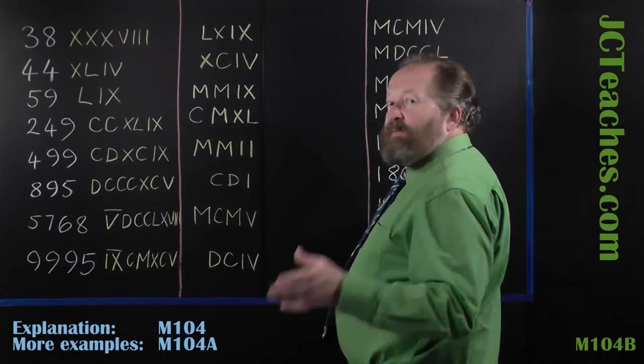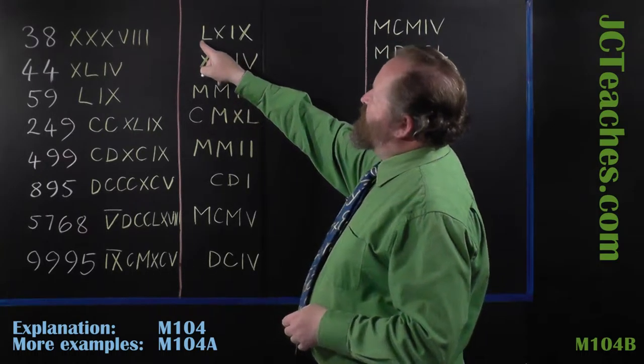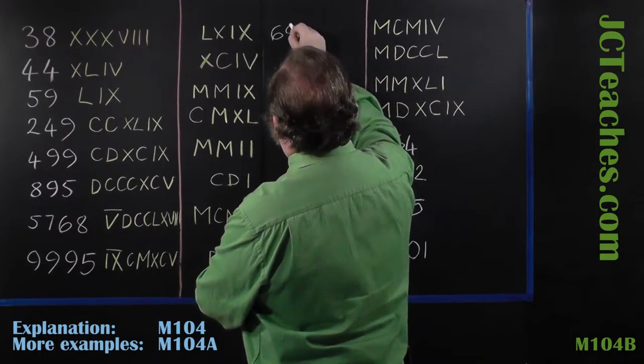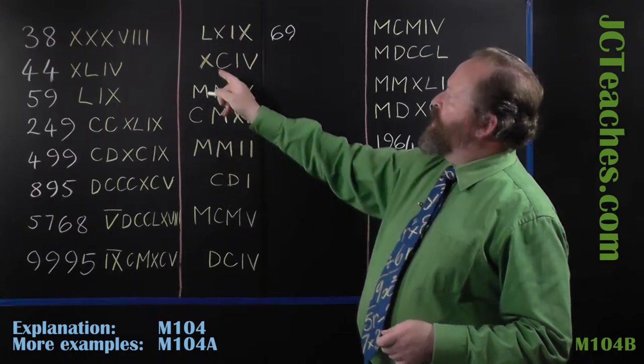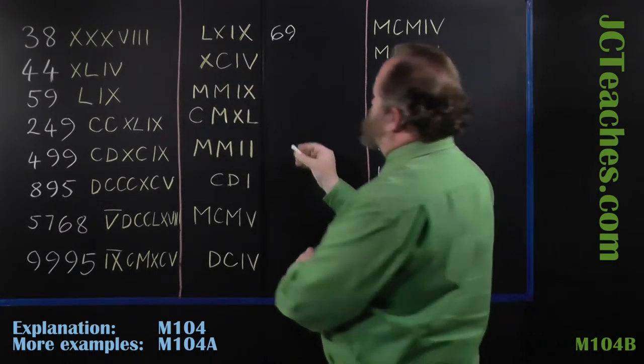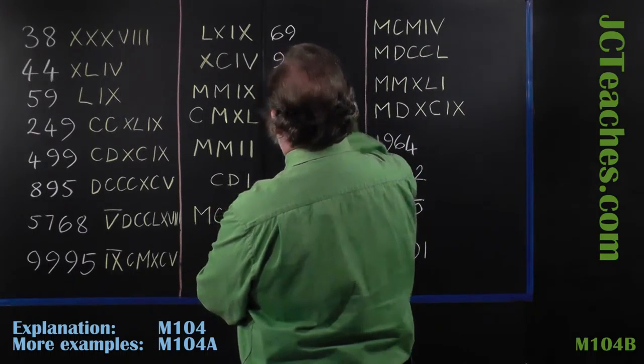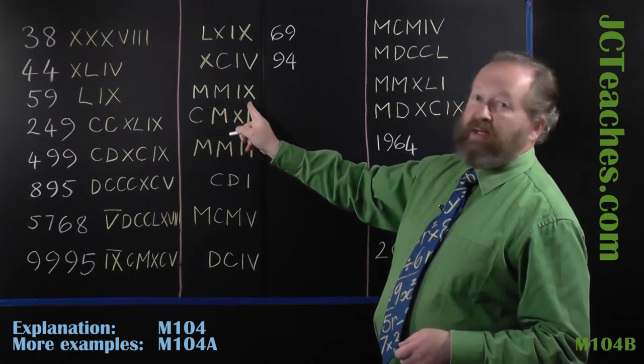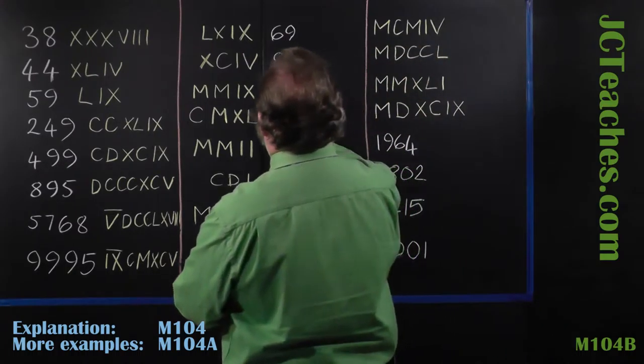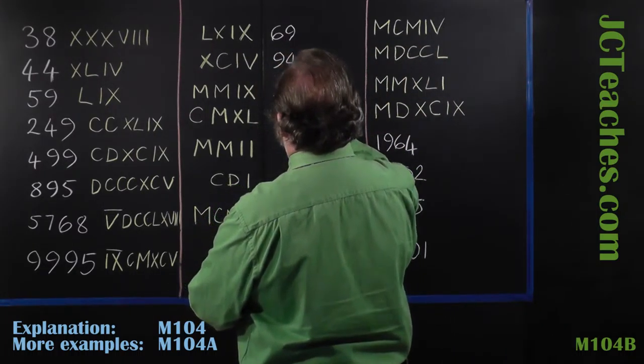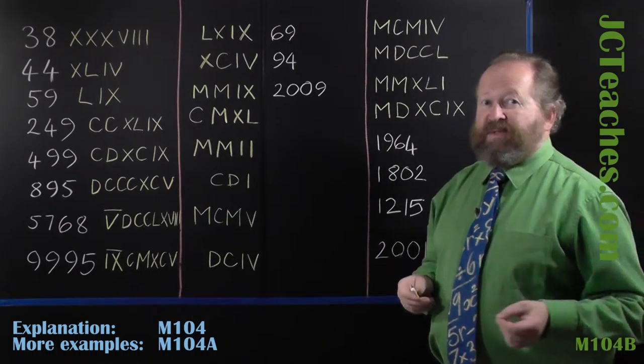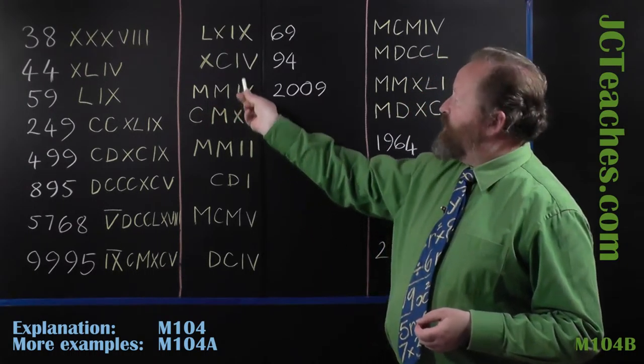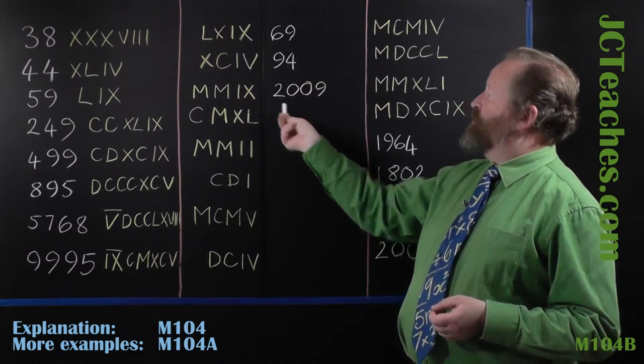Moving on to these ones where we're converting back from the Roman numerals. This is 50, 60, 69, so that is 69. This one is 90 which is XC, 4, so 94. This one, 1,000, 2,000, and 9, so it's 2,009. Remember the Romans didn't have a figure for the zero, so you just get 2,009 directly after it with nothing in between indicating that there are no hundreds, but we have to put the zeros in otherwise it doesn't make sense.